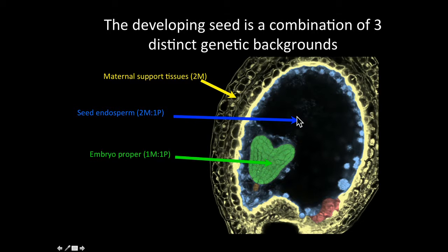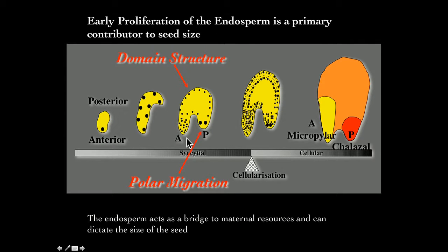If you think about what of these structures predominantly leads to or dictates seed size, what you see in early development is this proliferation of the cells of the endosperm. The endosperm is a syncytial form of development - very like Drosophila early embryonic development. You get these nuclei that are free of cytokinesis, so we don't really develop cell walls, but you get this sort of anterior-posterior patterning. Then you get cellularization, and once cellularization occurs, there's this switch from more endosperm proliferation to then embryonic development filling up that space.